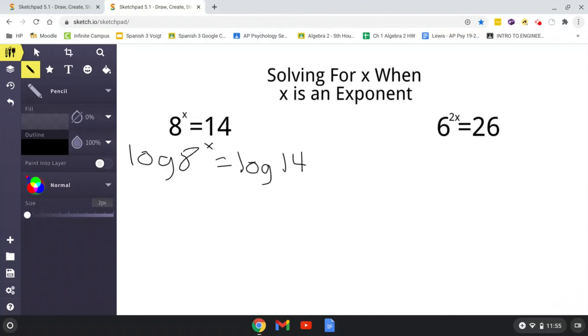So what we're going to do is we're going to divide log of 8 to the x by log of 8, and do the same to the other side. Divide by log of 8. Now let me get my calculator here. x equals, now in your calculator, just put log of 14 divided by log of 8.